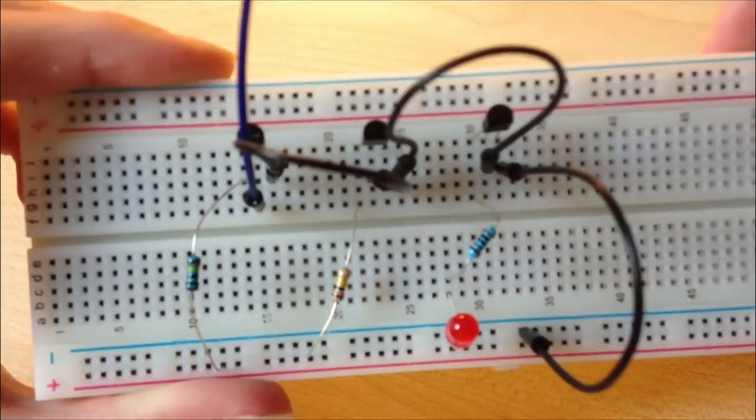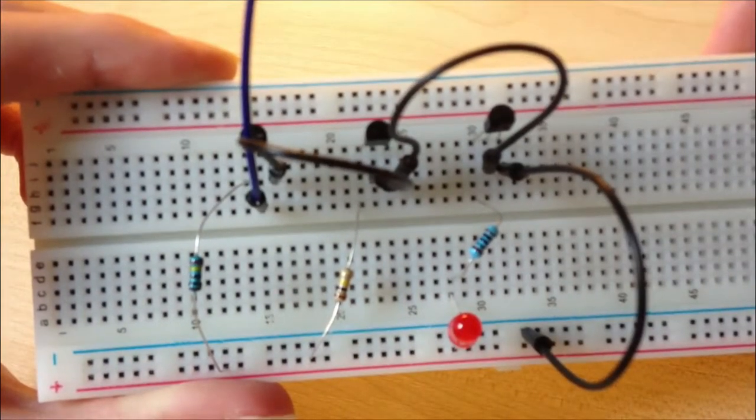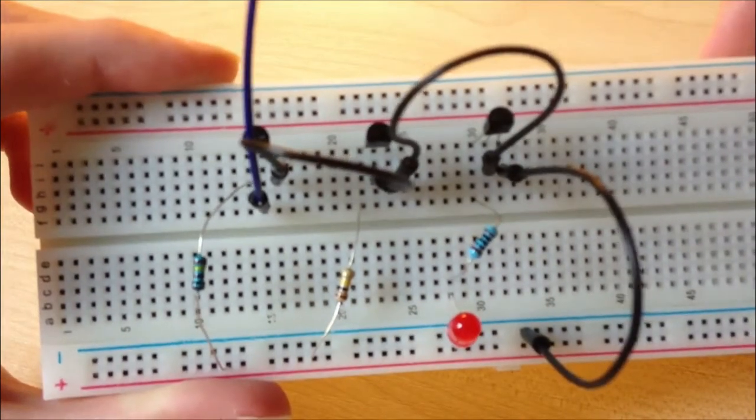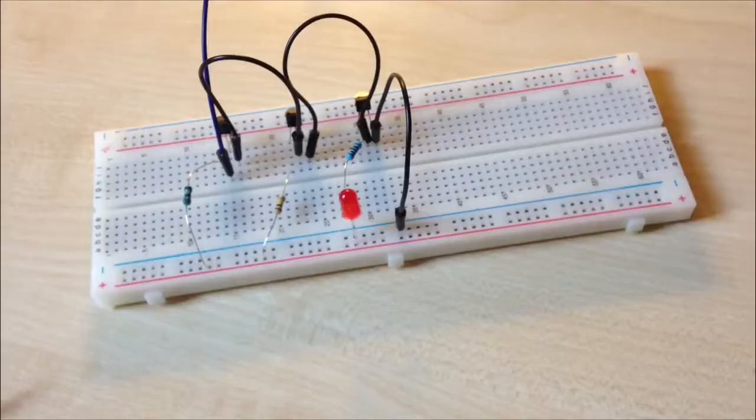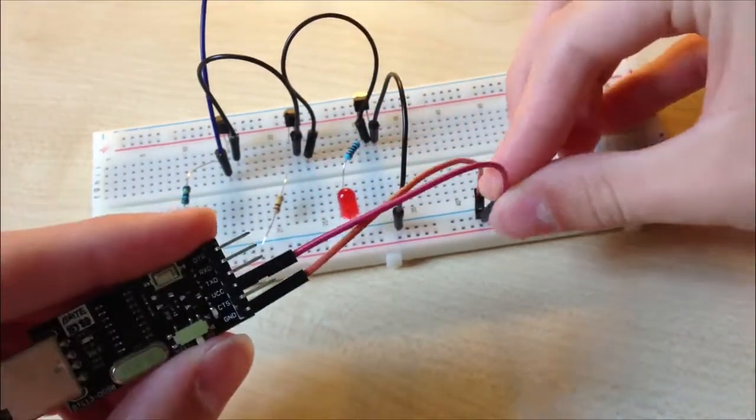Our electrostatic detector is ready. We are using three transistors because the signal is amplified 8 million times. Now connect it to 5 volts.